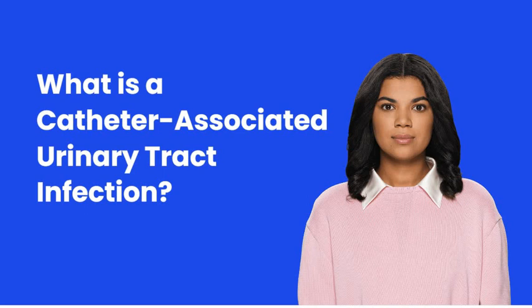What is a catheter-associated urinary tract infection? A CAUTI occurs when bacteria or yeast enter the urinary tract through a catheter, a tube placed in the bladder to drain urine. These infections can develop in anyone using a urinary catheter, including patients in hospitals, long-term care facilities, and individuals at home.